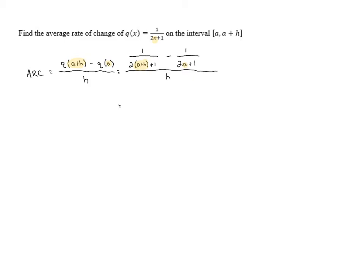Now, in the first fraction, I am going to use the distributive property in the denominator to distribute this 2 to the a and h. So it's going to be 2a plus 2h plus 1. And then the other denominator is just 2a plus 1 all over h.